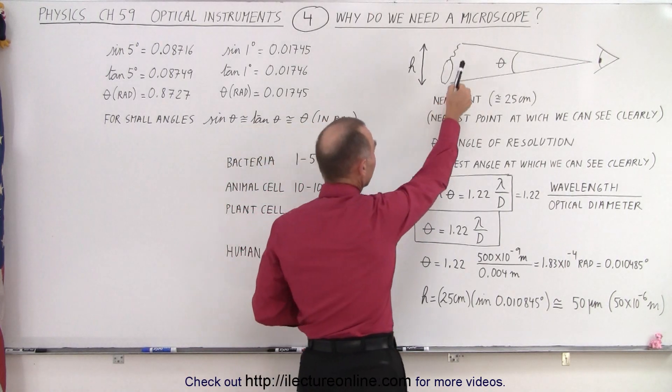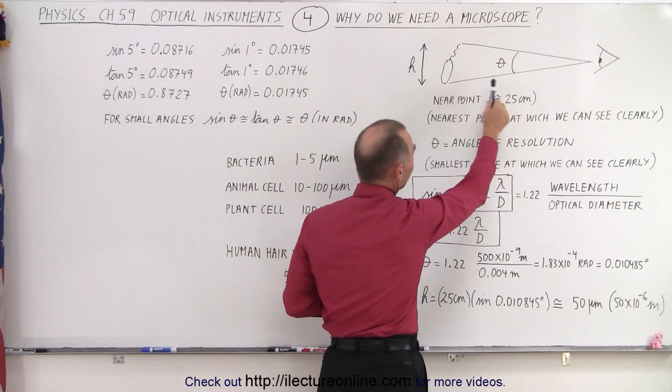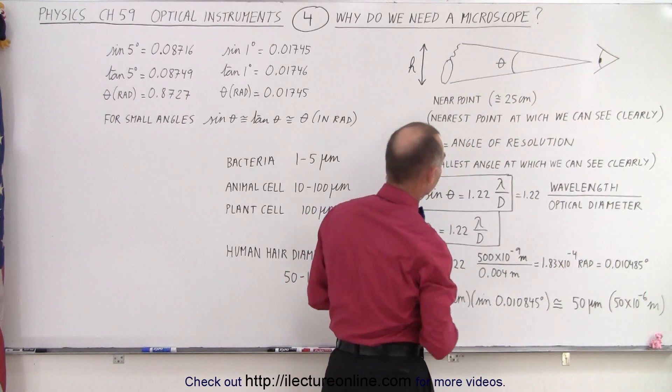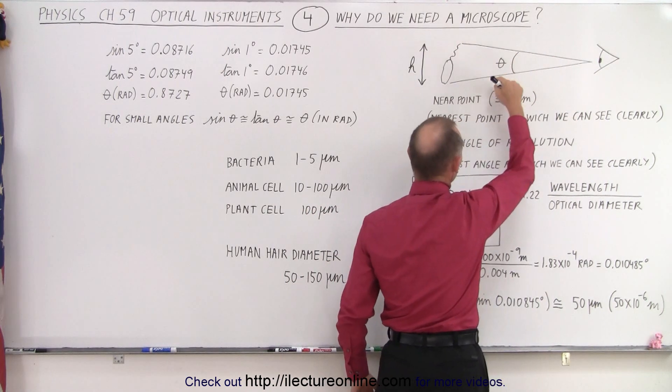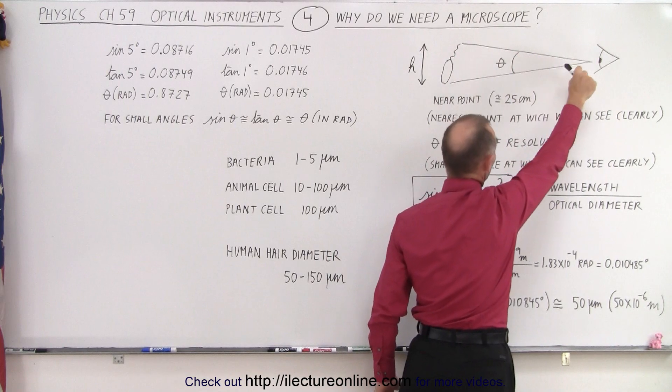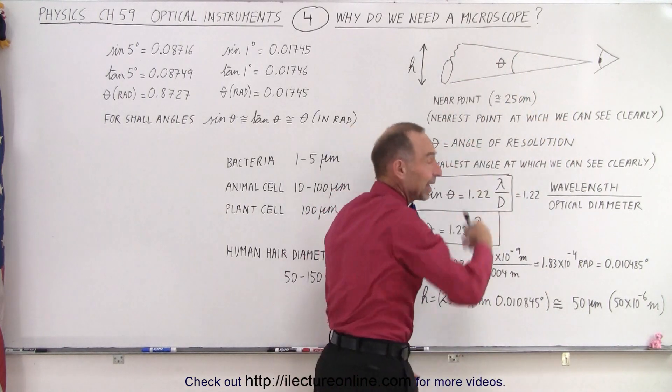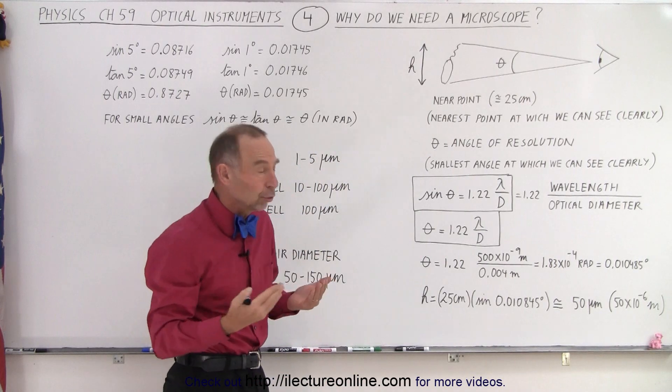And so we bring something like a small one-celled organism to within 25 centimeters of our eyeballs. So then we have what we call an angle of resolution. If we take the top portion and the bottom portion of the object we want to look at, and we draw lines to our eye, we can see that subtends an angle that's called the angle theta. And that's called the angle of resolution.